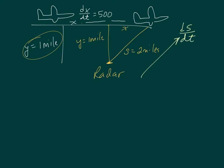Alright, well, I can see we have a right triangle here. So we'll use x squared plus y squared equals s squared.